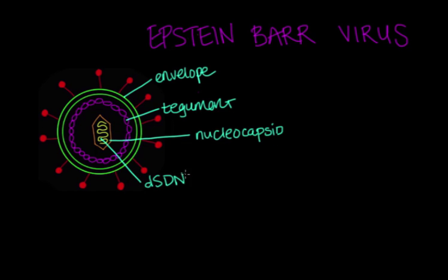EBV is no different and has a specific set of glycoproteins, which allow it to bind to epithelial and B-cells in the host. Two important glycoproteins are GP350 and GP42. Now remember these, because we'll come back to them.